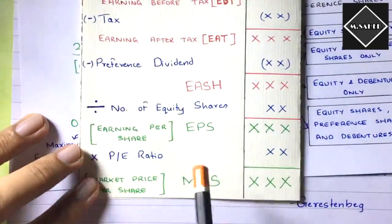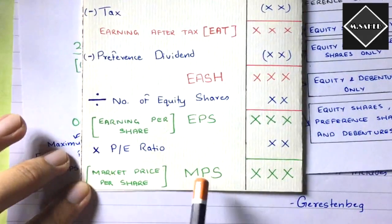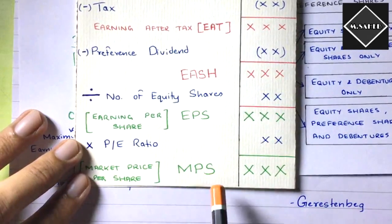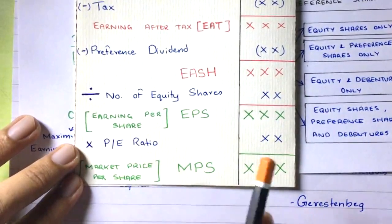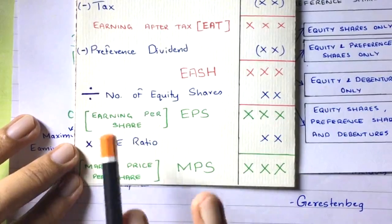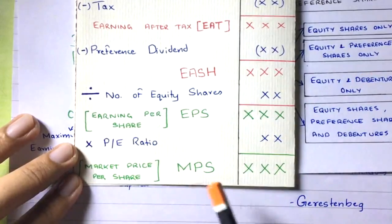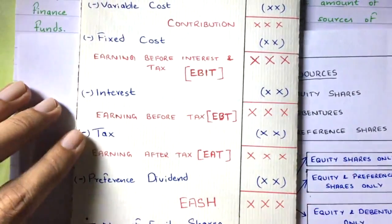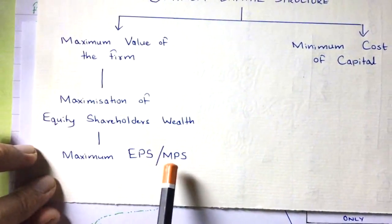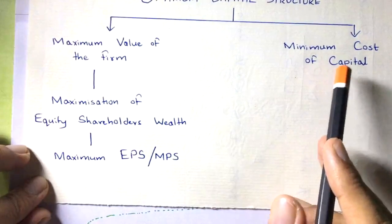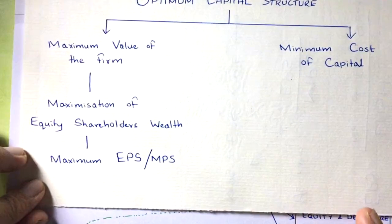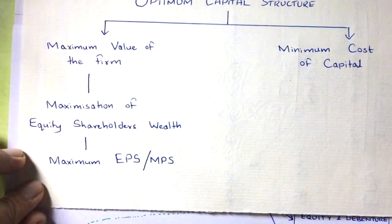If you have EPS and PE ratio, calculate MPS and compare MPS across all options. Choose the option with the highest MPS. If PE ratio is not given in the question, you can't calculate MPS — the problem ends at EPS. Mostly in BCom exams, the price earning ratio is not given, so problems conclude at EPS. In the next video, we'll solve a problem on EBIT EPS analysis, and then move on to leverages — combined leverage, financial leverage, and operating leverage.